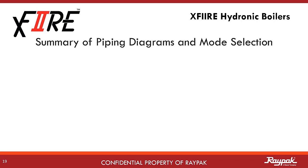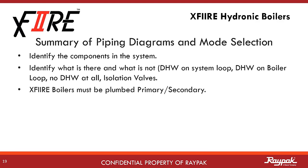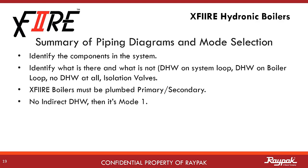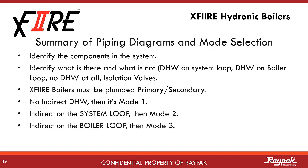Here are some overall pointers on plumbing systems and how they relate to mode selection for type H boilers. Identify all of the parts of the system and look for what is there as well as what is not there. Make sure it is plumbed primary-secondary. In most cases, with no indirect domestic hot water present, Mode 1 will be your choice. If you have an indirect domestic hot water tank present on the system loop, then it's Mode 2. If the indirect domestic hot water is present on the boiler loop, then it's Mode 3.